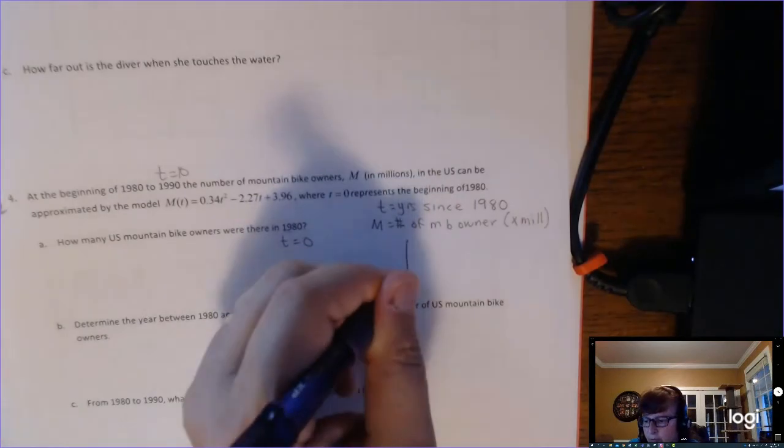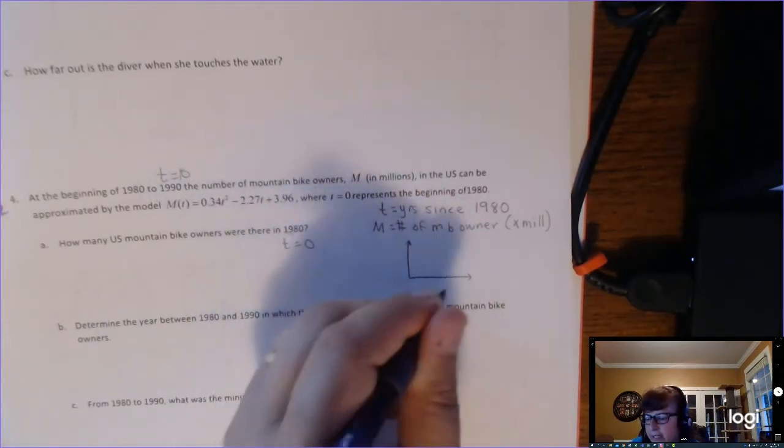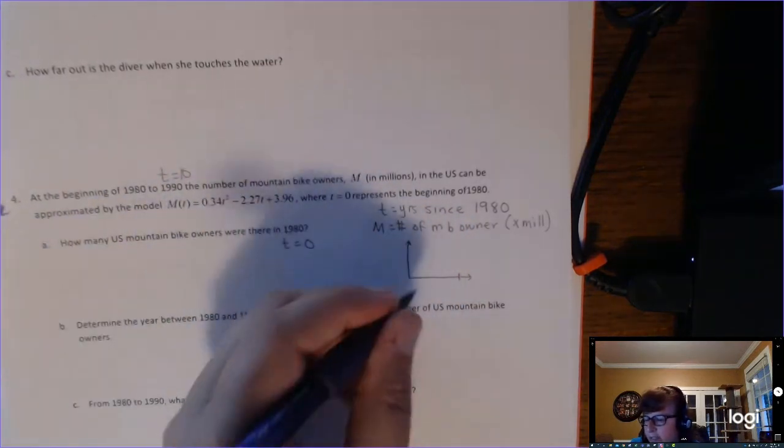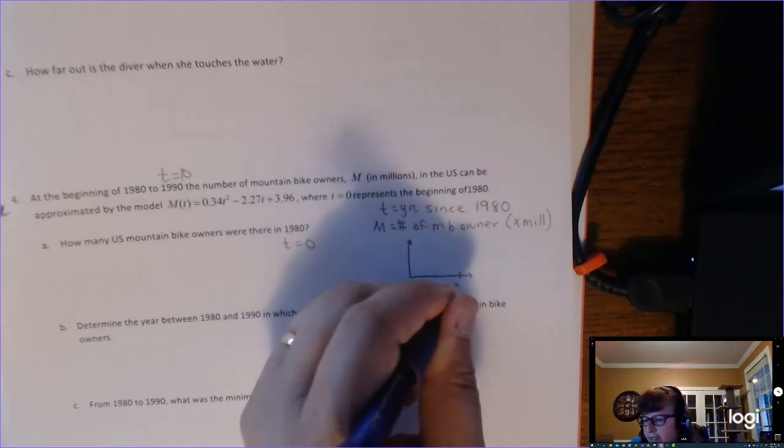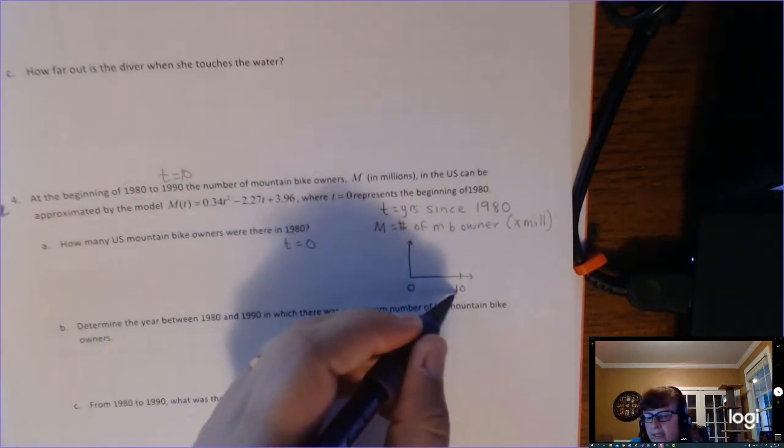All right, so let's sketch this graph. Here's what the graph would look like. Instead of putting 1980 here and 1990 here, see it's only working for these 10 years. I'm going to put zero and 10, and when it's time to interpret, I know that means 1980 and that means 1990.